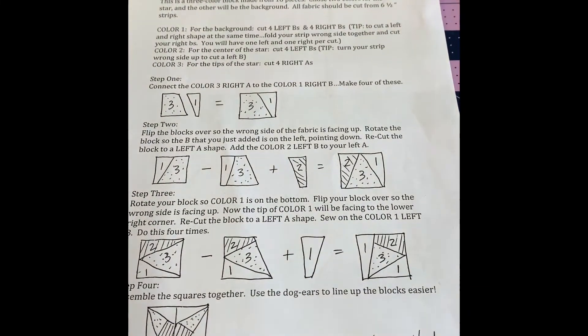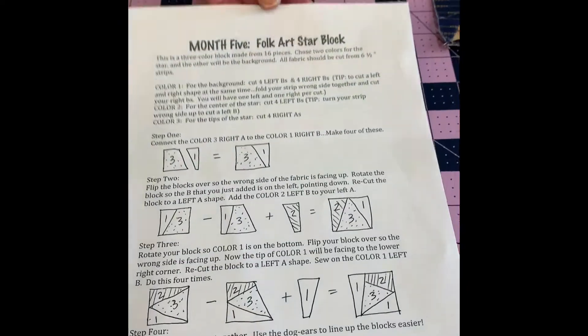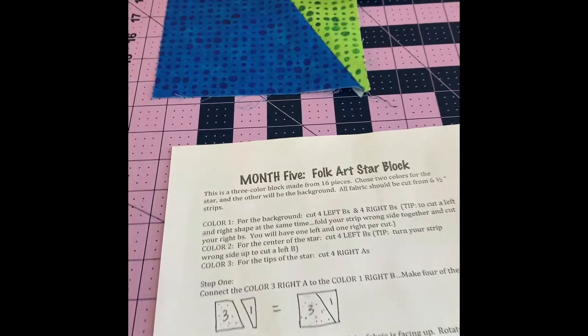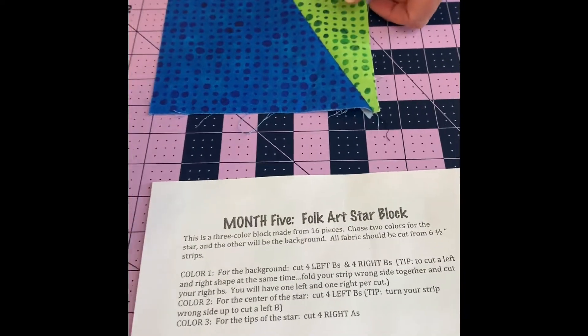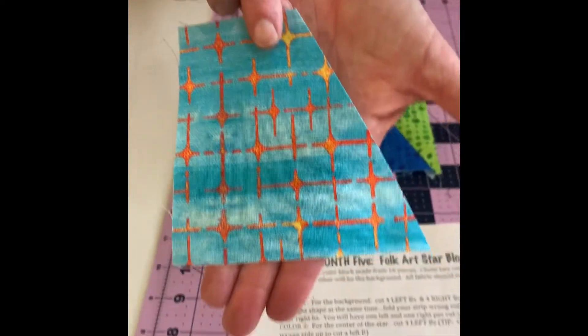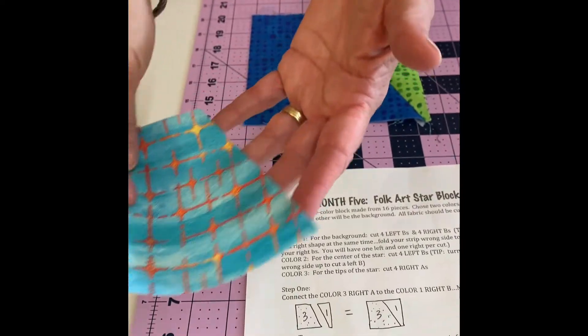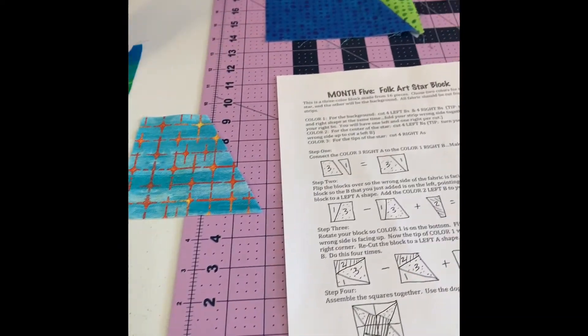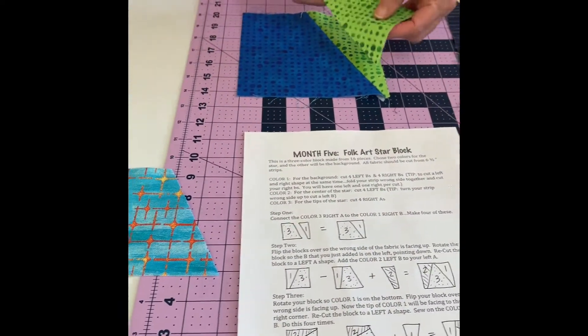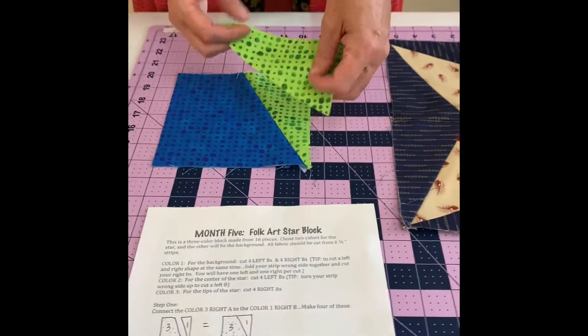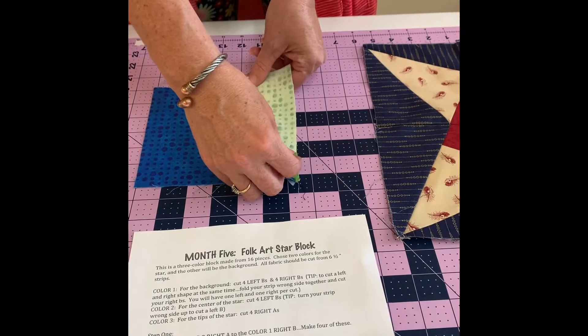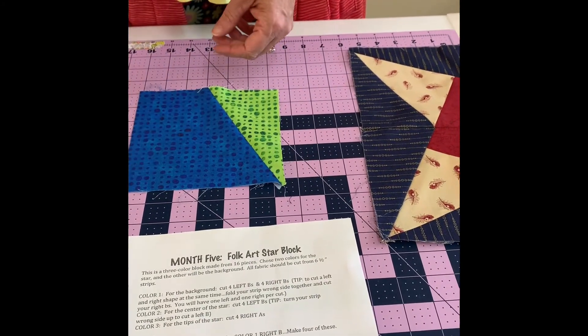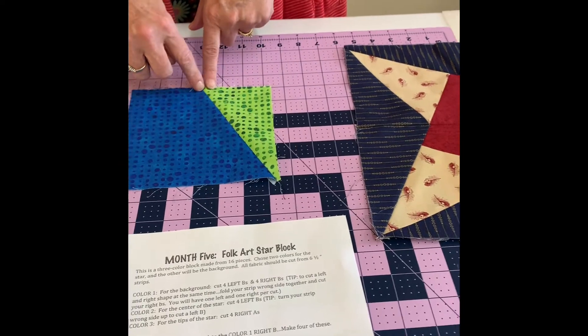But the first thing you need is an A shape, which is our blue. So this is your trapezoid shape, which is the same as this guy. So that's the trapezoid. You always have a right facing A and then you're going to need a right B. So as you're lining these up, you're going to flip this over. But this is your shape right here.